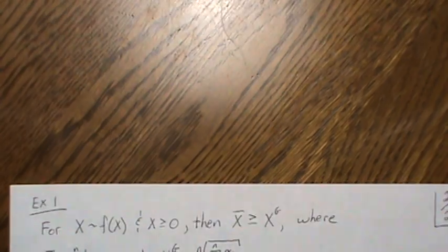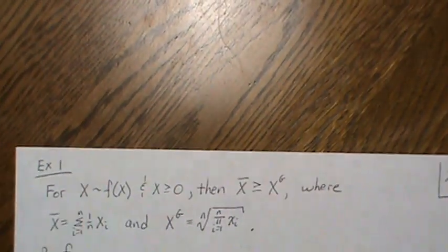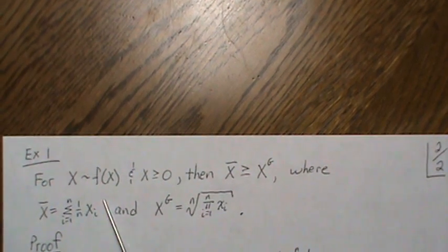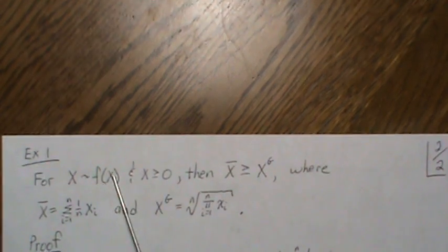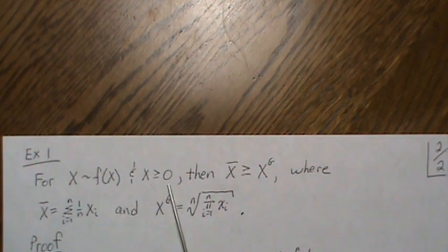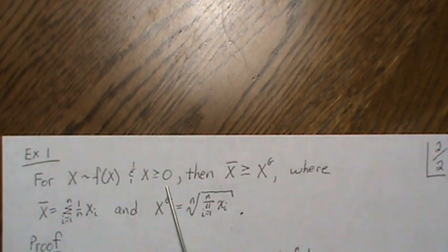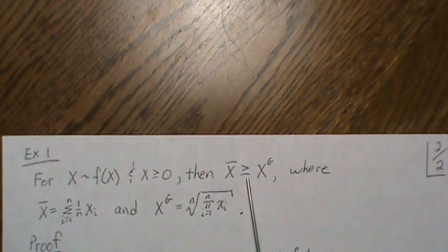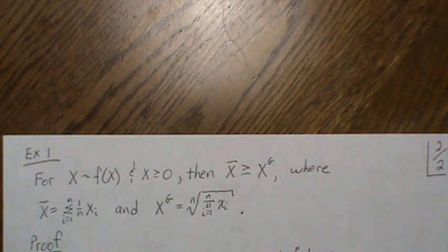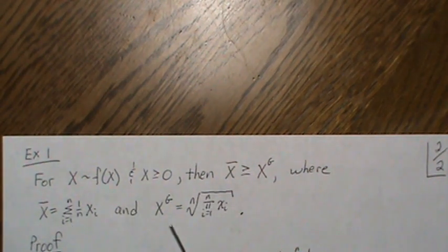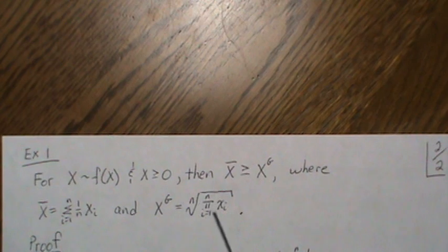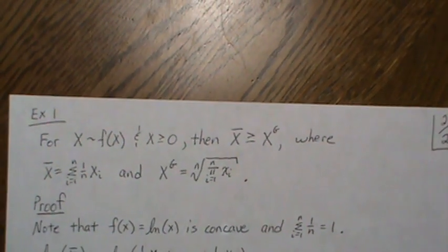For application one, let x_1 through x_n be non-negative values distributed with some distribution f. We want to show that the arithmetic mean is always greater than or equal to the geometric mean — that is, the n-th root of the product of the x_i's. These are the standard definitions of the mean and geometric mean.